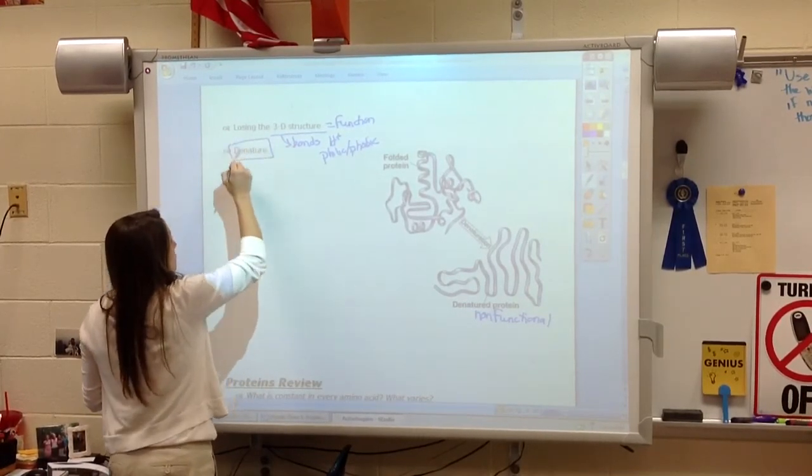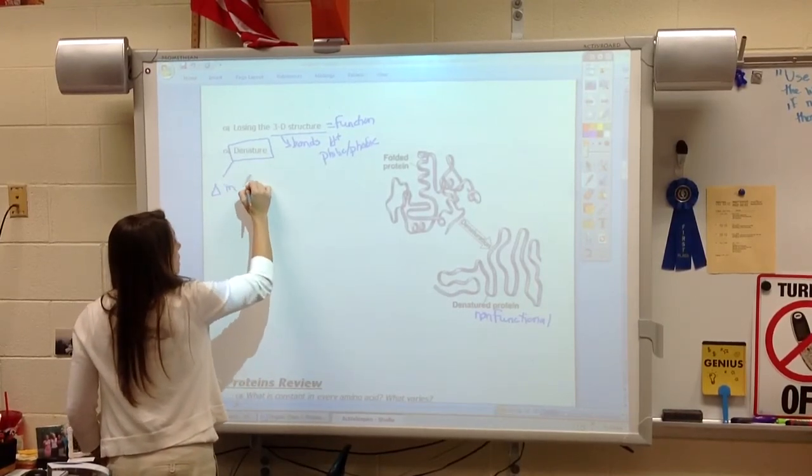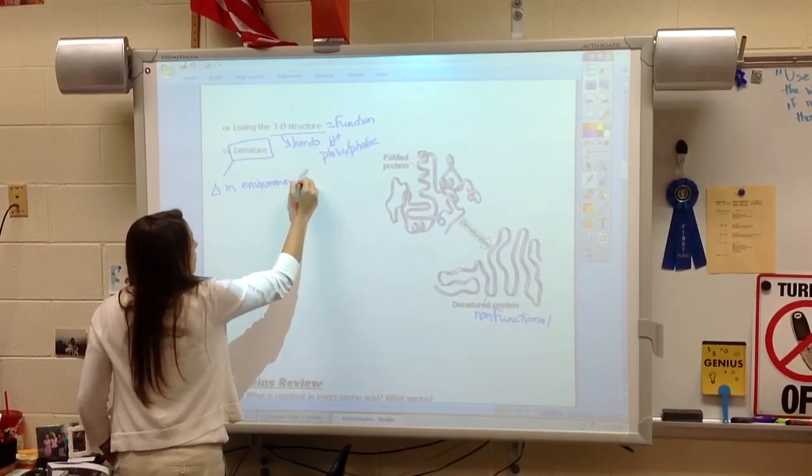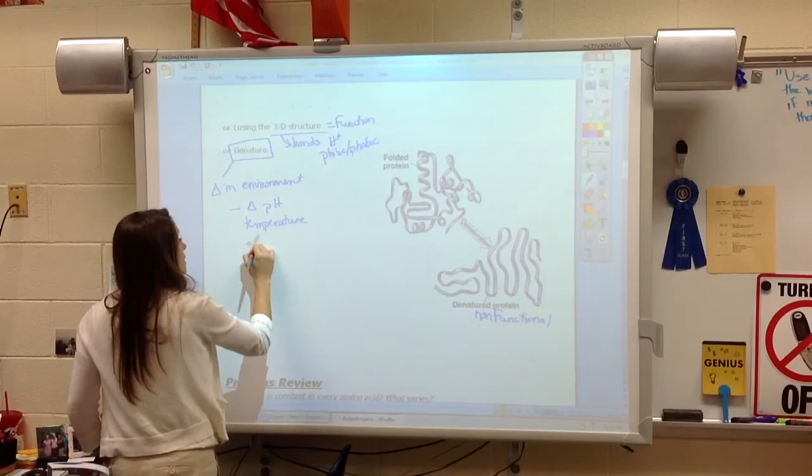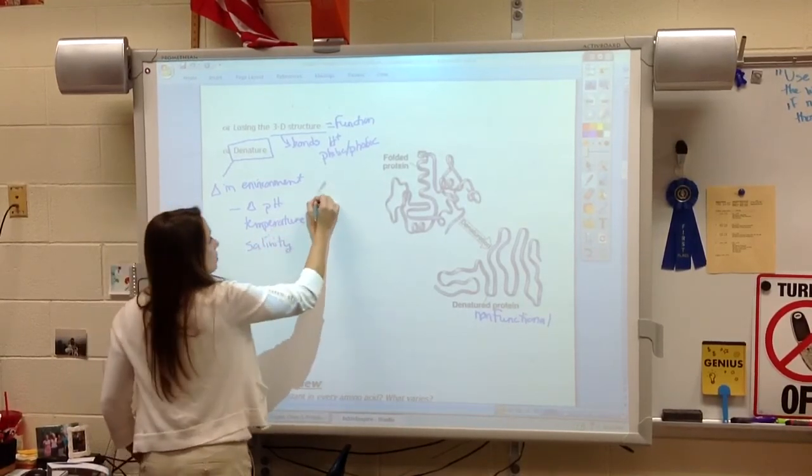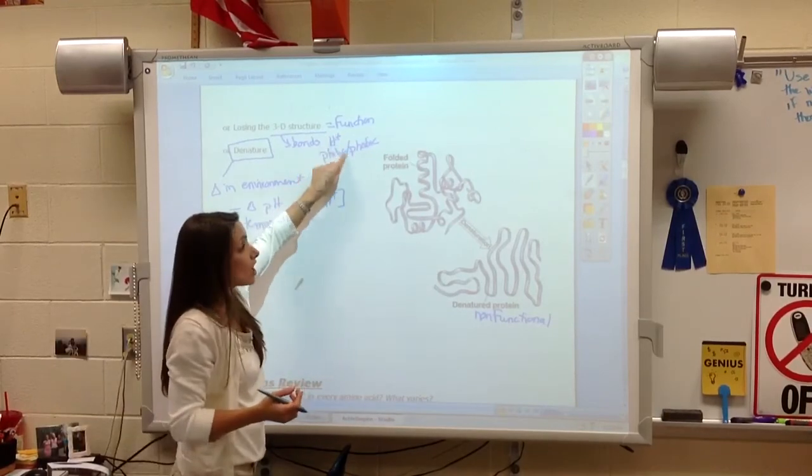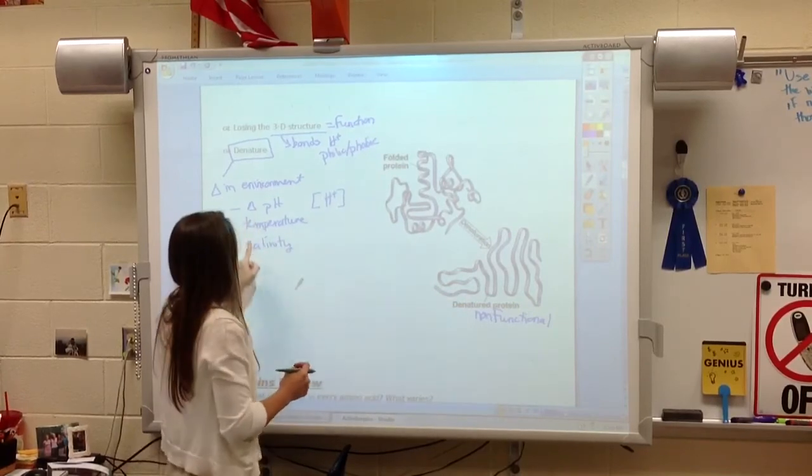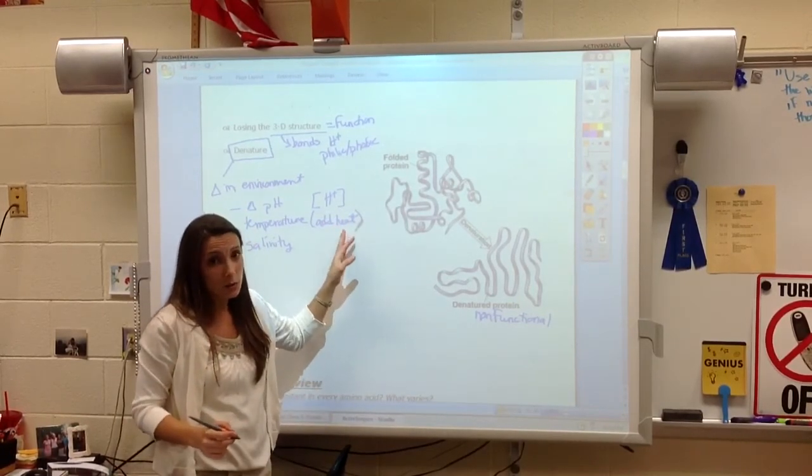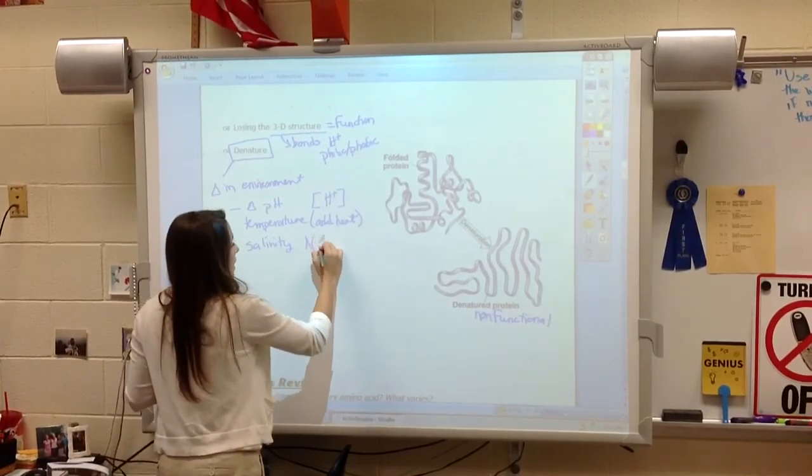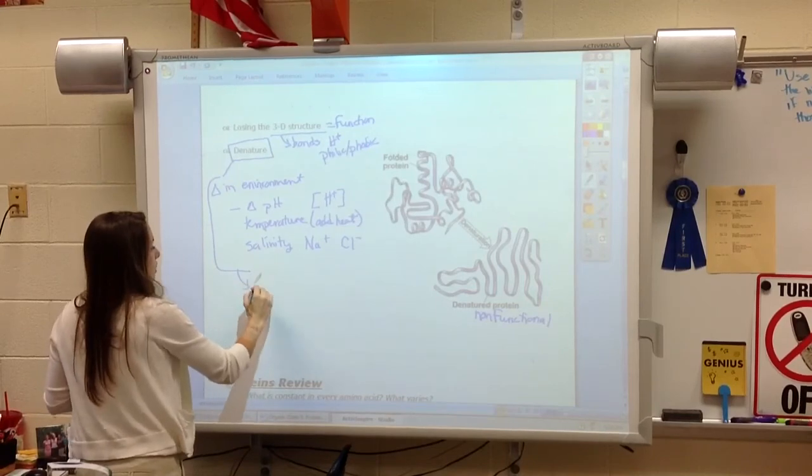So if there's anything that disrupts these bonds, then I lose the shape. We call losing the shape denaturing. And this can happen by a change, we write that delta, the triangle, change in the environment. This can be a change in the pH, temperature, or the salinity. Keeping in mind, pH is just a measure of hydrogen ion concentration. If I have more hydrogen ions, then I'm going to change how these bonds interact. And I might break some of these bonds. If I change the temperature, mainly adding heat, I'm going to break some bonds. If I add salinity, I'm adding ions, Na+, Cl-, I'm going to interrupt those bonds. So these changes are going to interrupt the bonds.